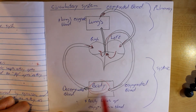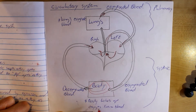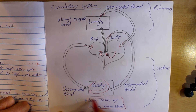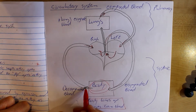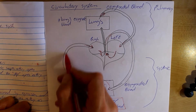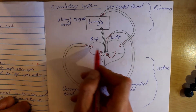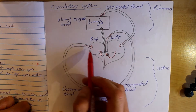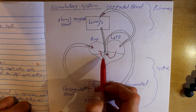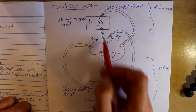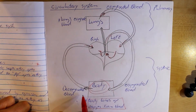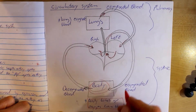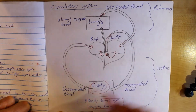Oxygenated blood travels to the body. Our body takes up oxygen from the blood. Then our deoxygenated blood returns back to the right side of the heart — to the right atrium — goes to the right ventricle again and goes back to the lungs. This is one cycle in our circulatory system.